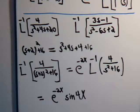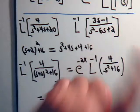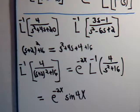This is equal to e to the minus 2x times the sine of 4x. So for the quantity 4 divided by s squared plus 4s plus 20, the inverse Laplace transform is e to the minus 2x times the sine of 4x. That was pretty straightforward — hopefully by now you're getting more used to these. Let's take a look at the next problem.